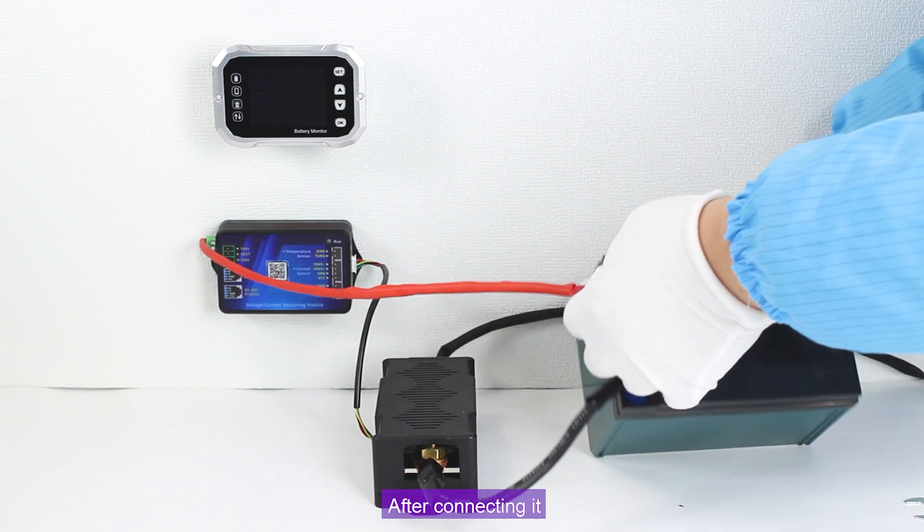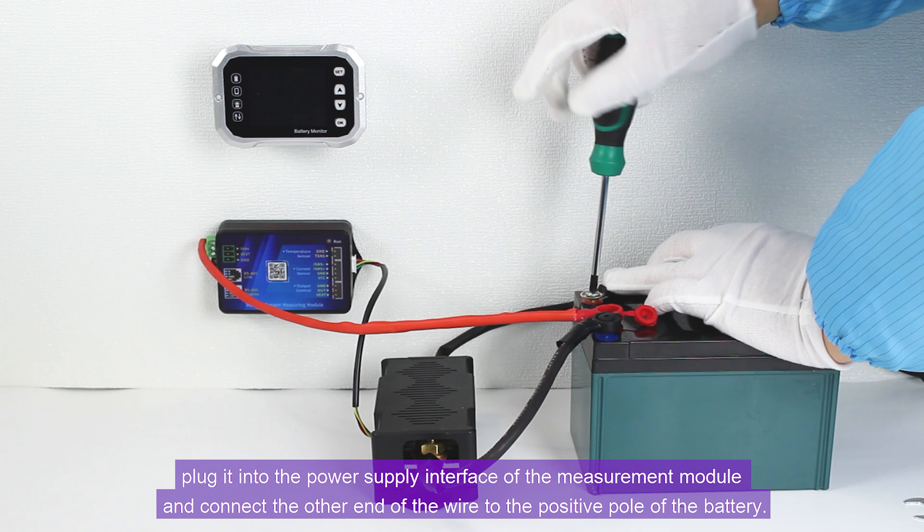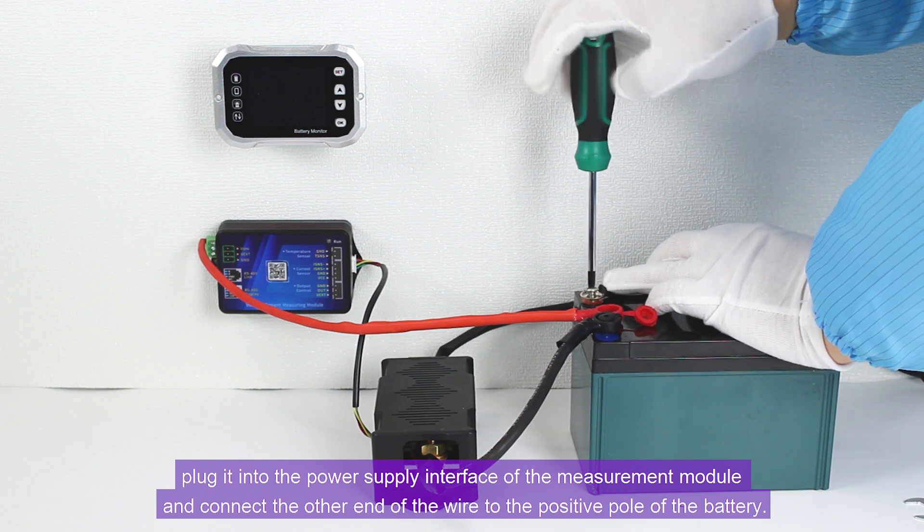After connecting it, plug it into the power supply interface of the measurement module and connect the other end of the wire to the positive pole of the battery.